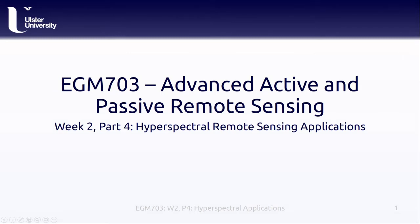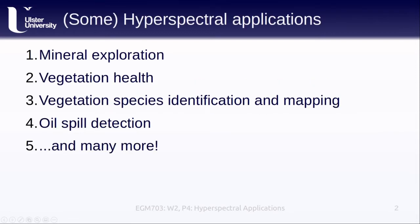Hello and welcome to Week 2, Part 4 of EGM 703, Applications of Hyperspectral Remote Sensing. In this lesson, we'll look at some different applications of hyperspectral images. There are many more applications than what we cover here, but I've tried to put together a nice collection of different topics and studies. We'll start by looking at mineral exploration and mapping, before looking at a few examples of vegetation studies, and then finish up by looking at some examples mapping oil spills.